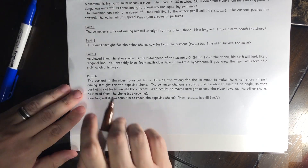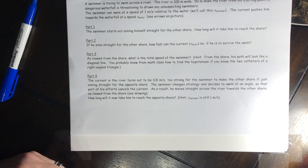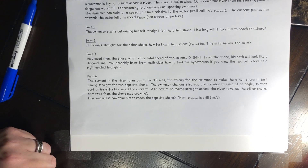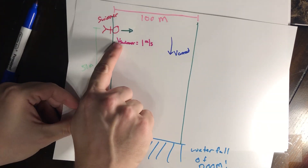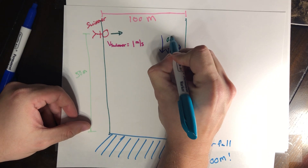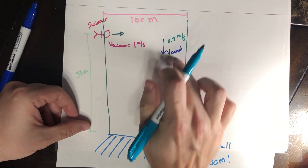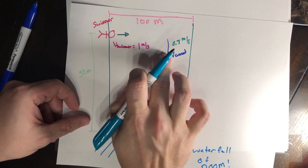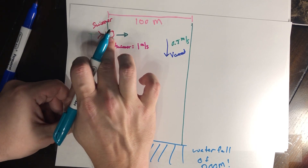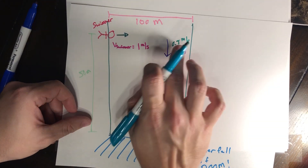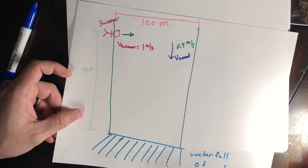For part three, the swimmer still aims straight for the shore. What is his total speed? He's going 1 meter per second across and 0.5 meters per second down, so we need to use vector addition. These are vectors because they each have a magnitude and a direction — 1 m/s straight across and 0.5 m/s straight down. We add them head to tail.